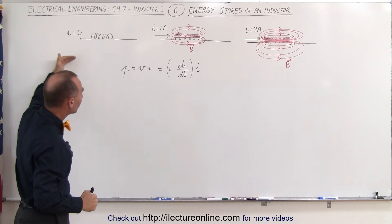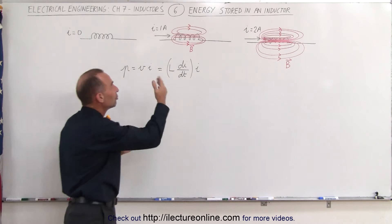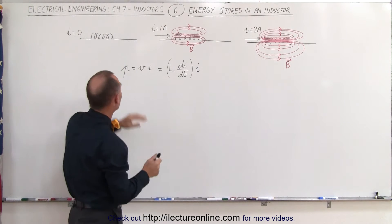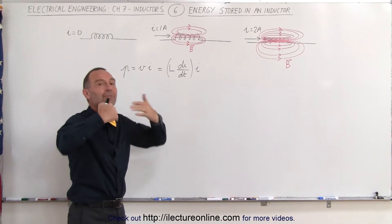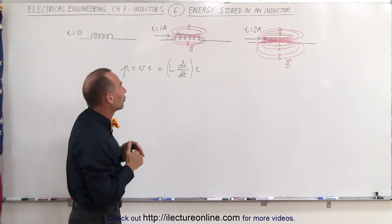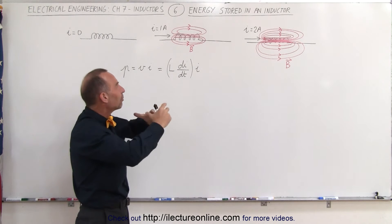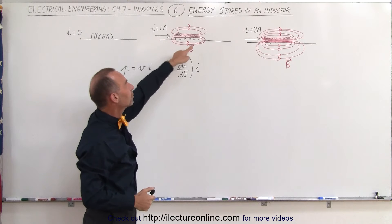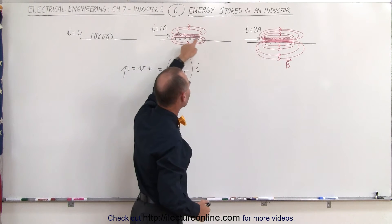But as you have current that begins to flow through the inductor, initially the inductor will oppose that change in current going from 0 amps to 1 amp and there will be an EMF induced that opposes the change. But eventually current will flow through the inductor and by doing that there is an establishment of a magnetic field through the inductor and around the inductor and back to the inductor like this.